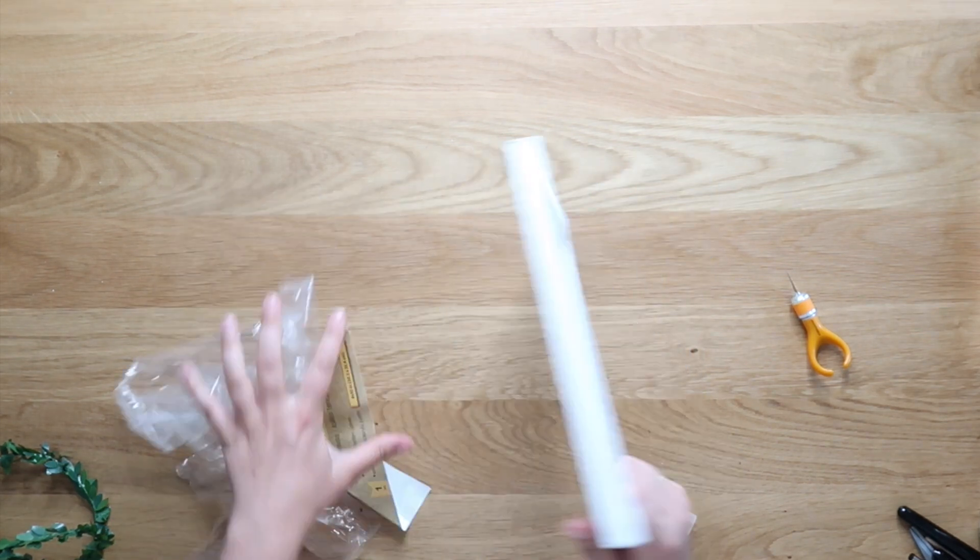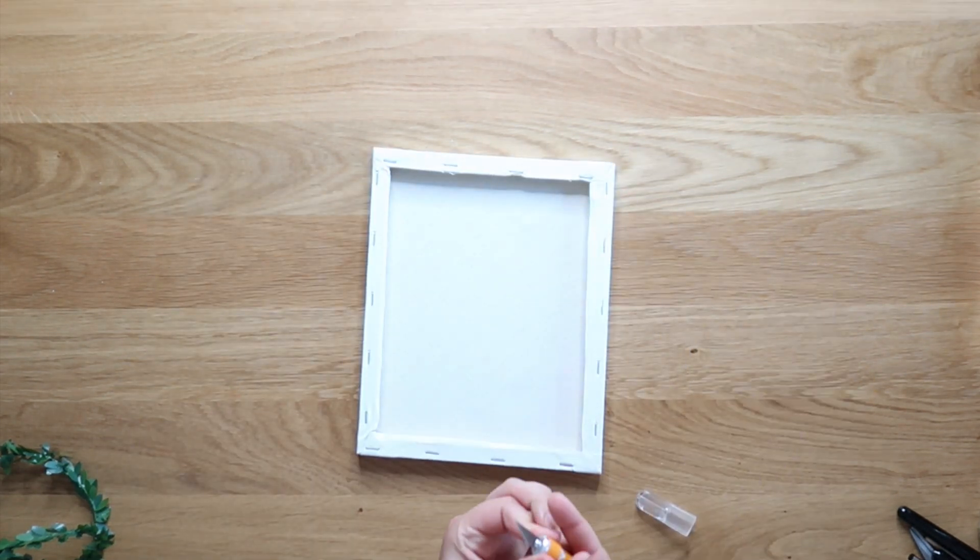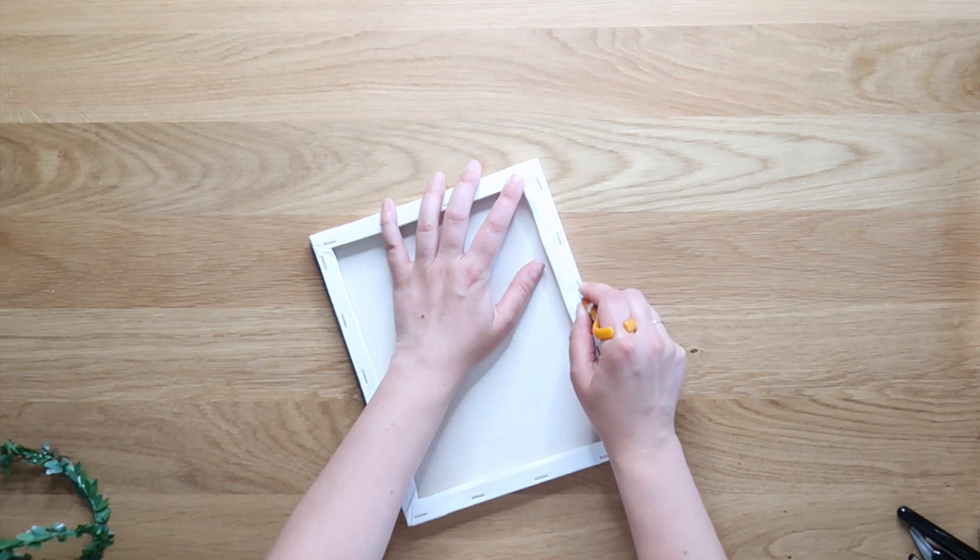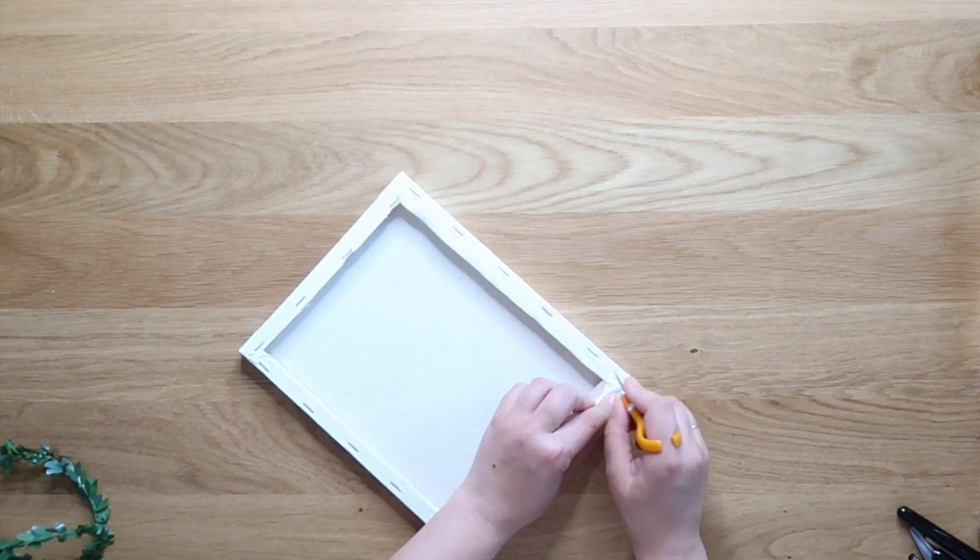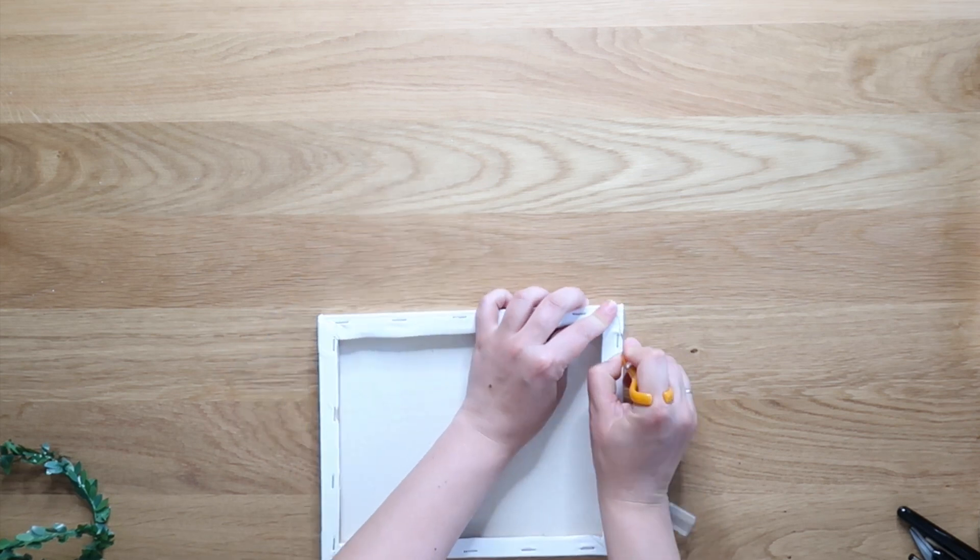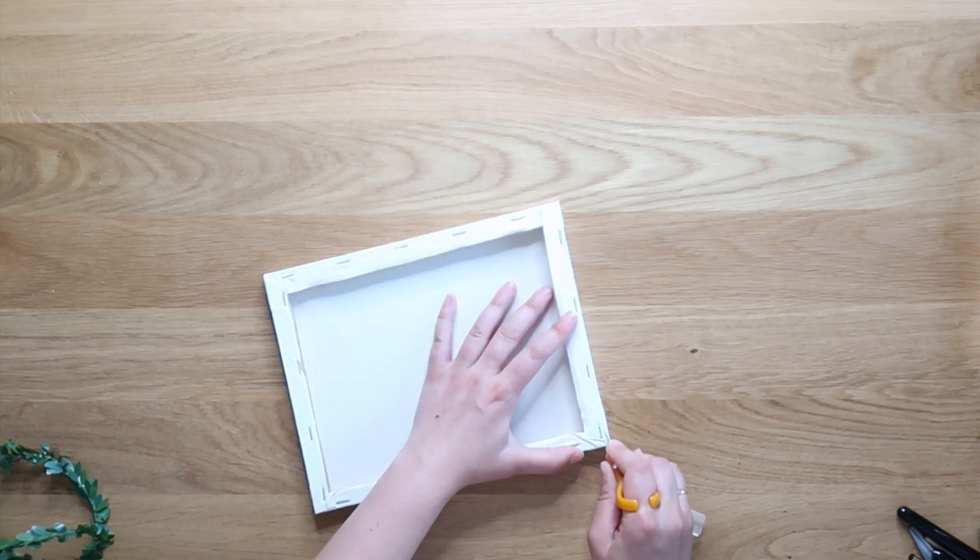Okay, here we go. So we are starting with a dollar store or Dollar Tree canvas. You don't have to use a Dollar Tree canvas. I just like these because the wooden frame inside is like a square. It's got like a flat front, not like a beveled front.